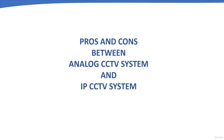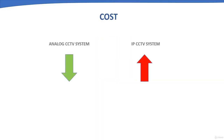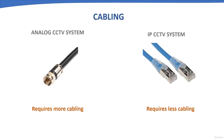Analog CCTV system cost is comparatively lower than IP CCTV system because analog components are cheaper. IP CCTV systems are more costly and their prices are also higher. Regarding cabling, an analog CCTV camera requires two separate cables — one for video transmission and another for power supply — hence it requires more cabling infrastructure.